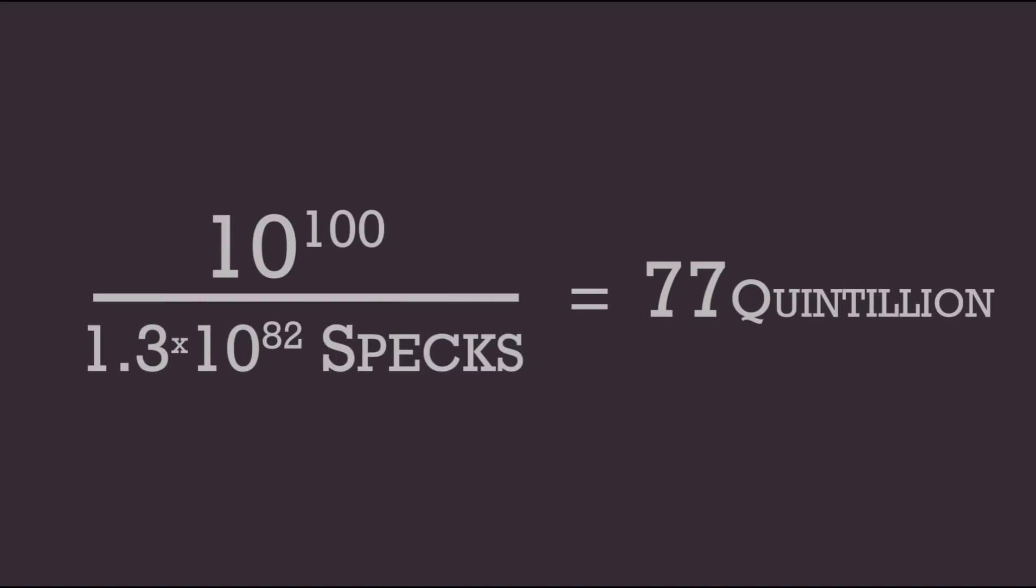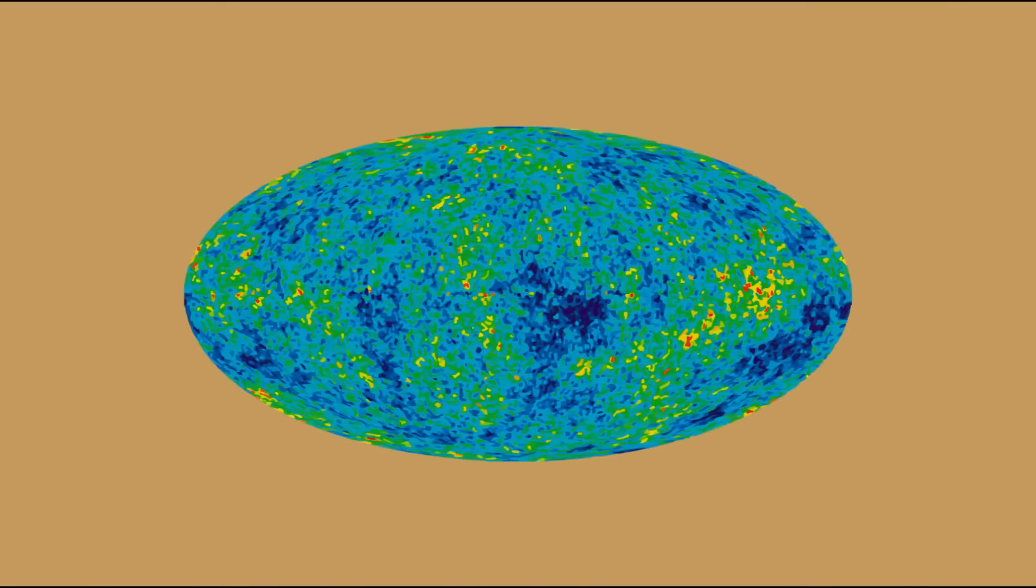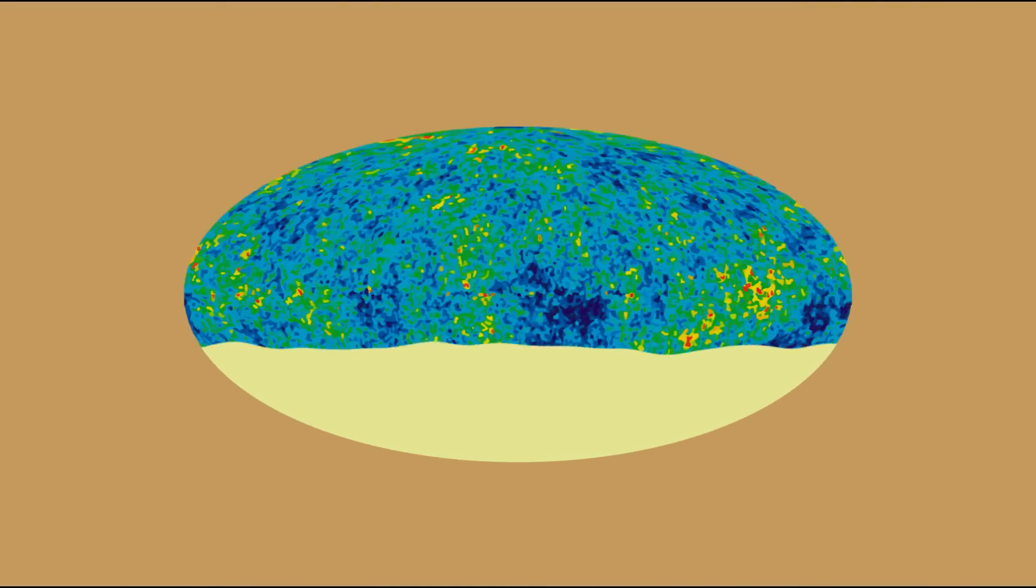However, this number is still off of a googol by a factor of 77 quintillion. To get something that comes even somewhat close to the size of a googol, we have to take the volume of the observable universe, a respectable 4 times 10 to the 71st kilometers cubed, and fill it with pollen specks. This would give us a grand total of 4 times 10 to the 95th pollen specks. In order to have one googol of pollen specks, you would need to have something to the volume of 100,000 visible universes filled with pollen.